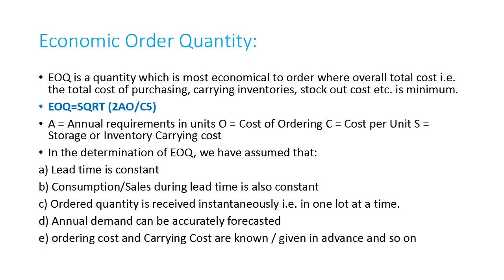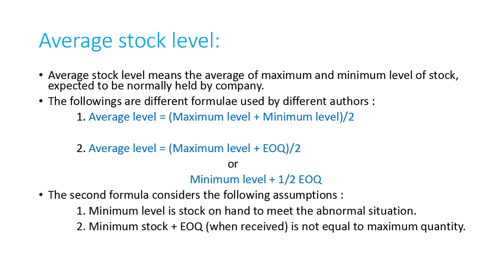Economic order quantity (EOQ) is the quantity which is most economical to order, calculated as: √(2AO ÷ CS), where A is annual requirement in units, O is cost of ordering, C is cost per unit, and S is storage or inventory carrying cost. Average stock level is the average of maximum level and minimum level, or it can be calculated as minimum level plus half the economic order quantity.